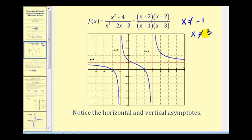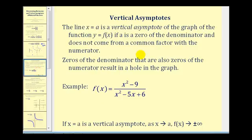To determine the equations of vertical asymptotes: the line x equals a is a vertical asymptote if a is a zero of the denominator and does not come from a common factor with the numerator. Zeros of the denominator that are also zeros of the numerator result in a hole in the graph, not a vertical asymptote.